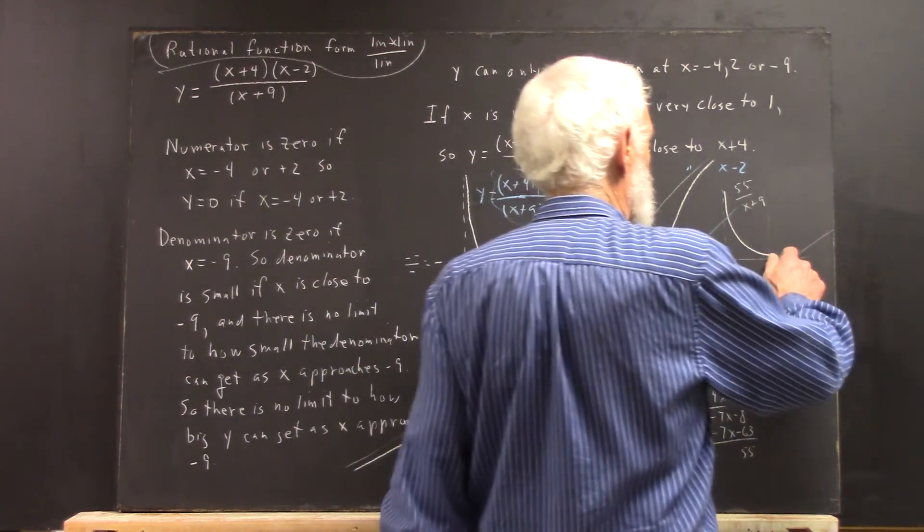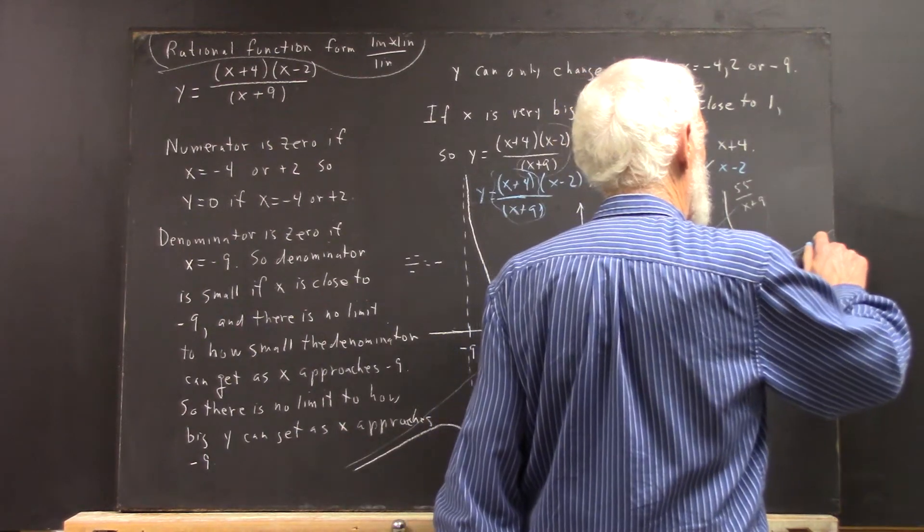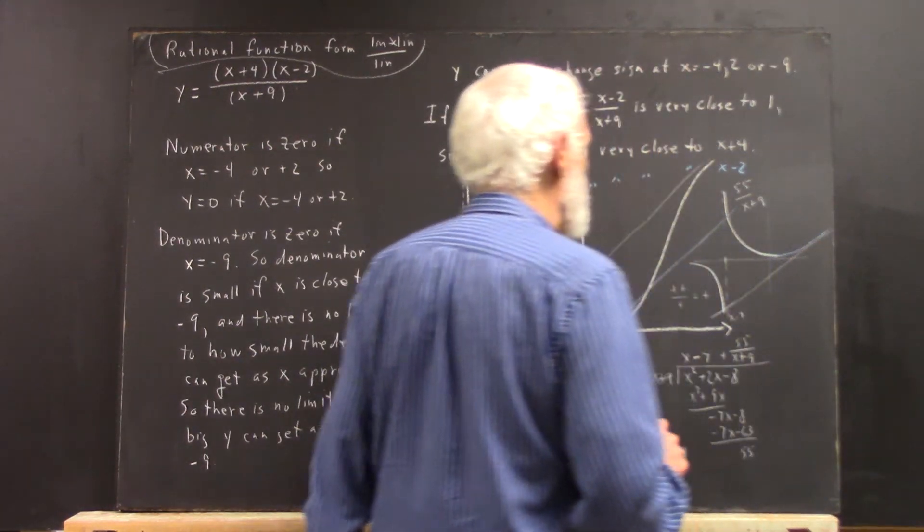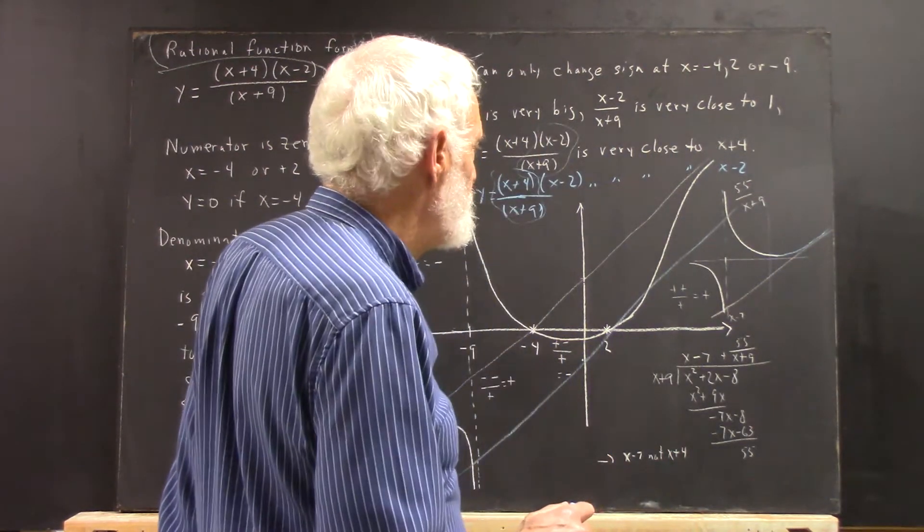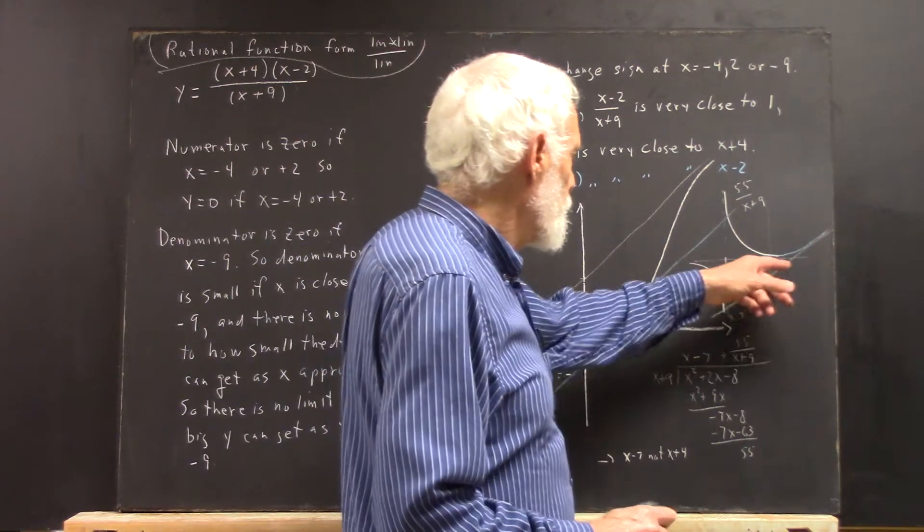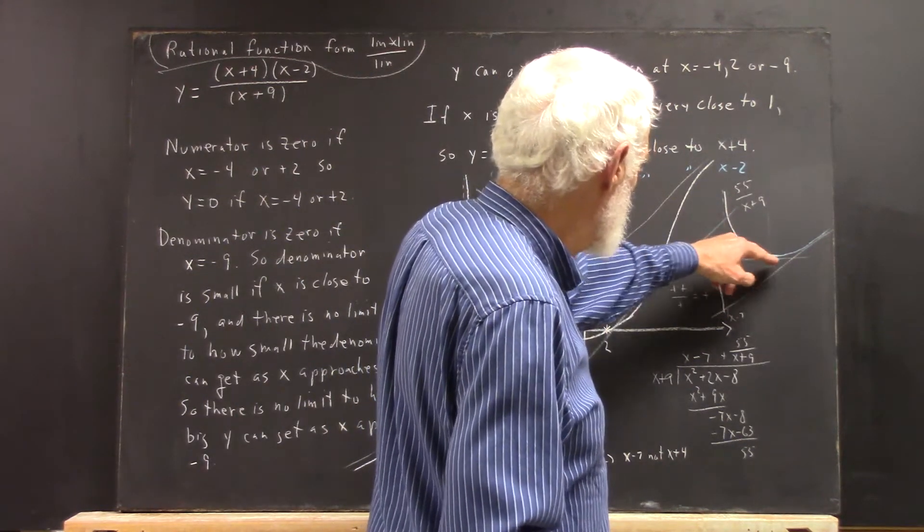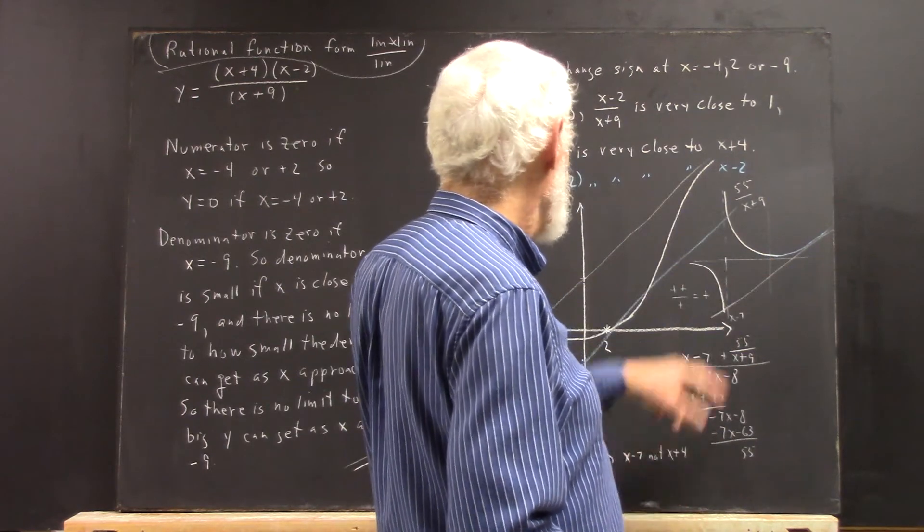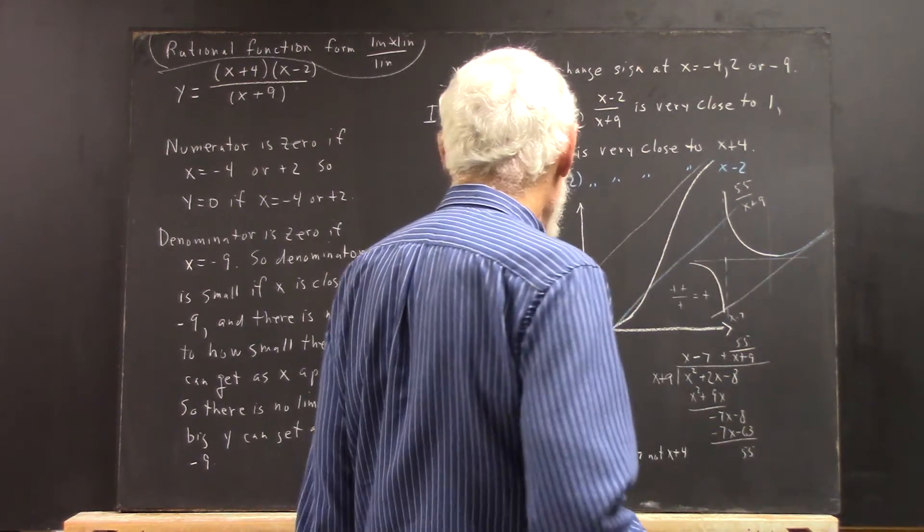We see that this part of the graph is going to come up and be asymptotic here. Except it's going to cross the axis, lower it a little bit, and come across so it's got its zeros at -4 and 2.